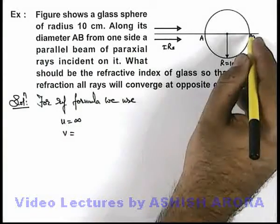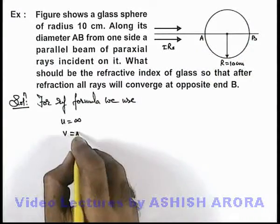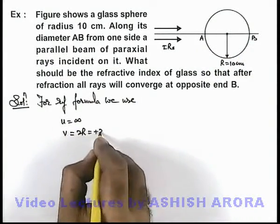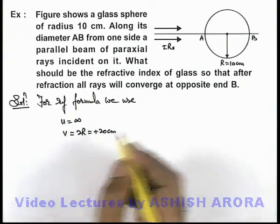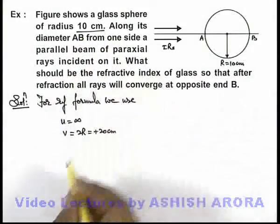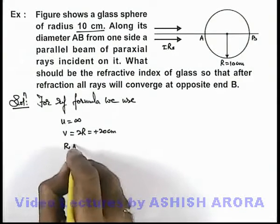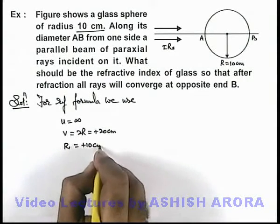And image position is at point B that means it'll be 2R that'll be plus 20 centimeter, as it's given that the radius of curvature is 10 centimeter. The value of radius of curvature is plus 10 centimeter.